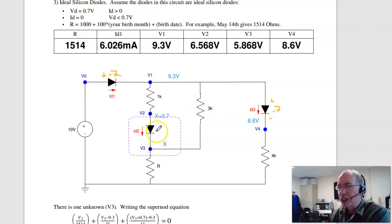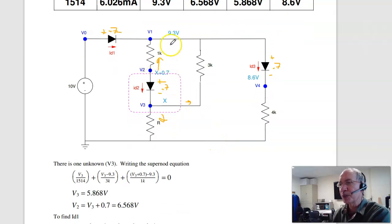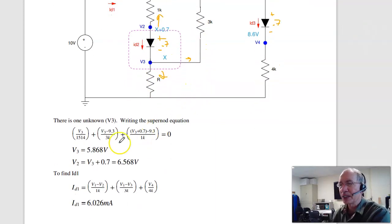Let's assume this diode is on. In that case, call this x, x plus 0.7. Again, this will be 0.7 volts if it's on. Now I have one equation, one unknown. Draw a super node. The current going up, down, and right. The current leaving the super node has to be zero. That gives you one equation, one unknown, x plus 0.7 minus 9.3, plus x over R, plus x minus 9.3 over 3k equal zero. Solve, I get V3 is 5.86 volts.